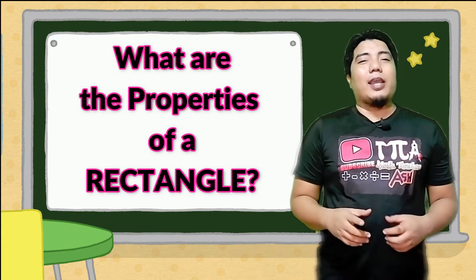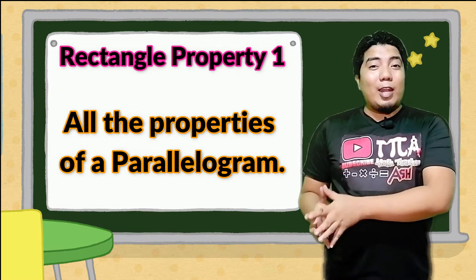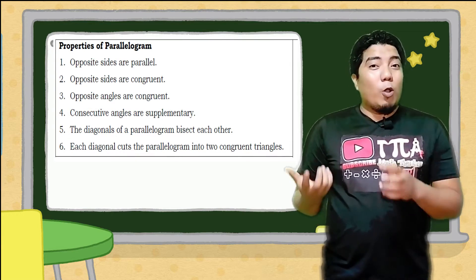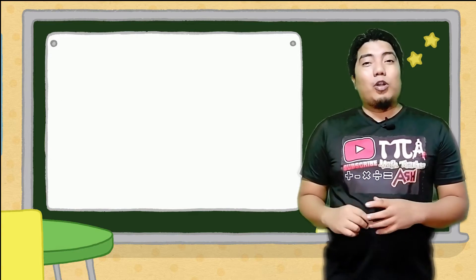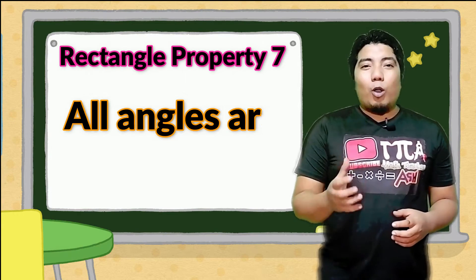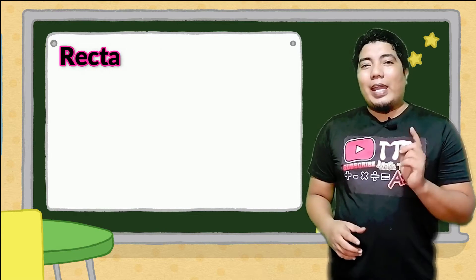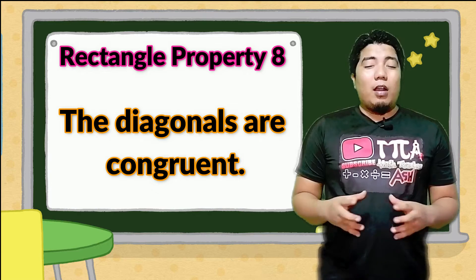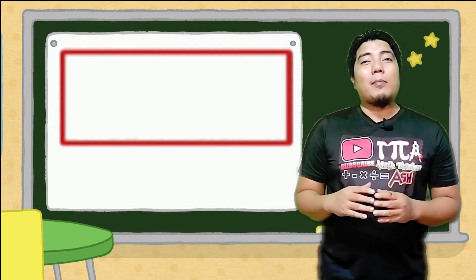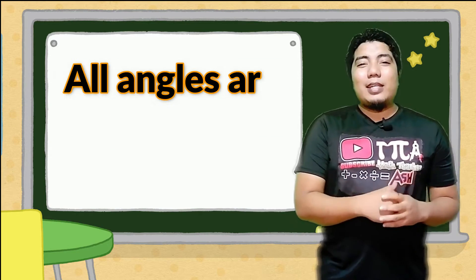So what are the properties of a rectangle? Property number one is that all the properties of the parallelogram also apply to a rectangle. The six properties we discussed for parallelograms apply here as well. Additionally, in a rectangle, all angles are congruent — meaning they are right angles — and the diagonals of a rectangle are congruent.